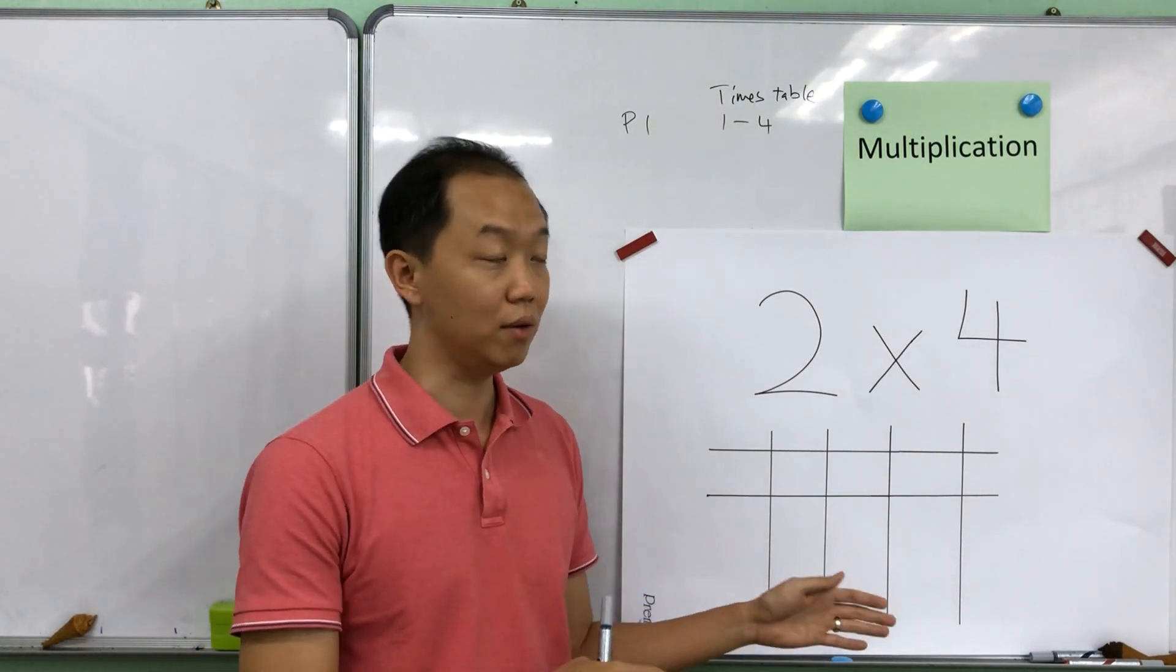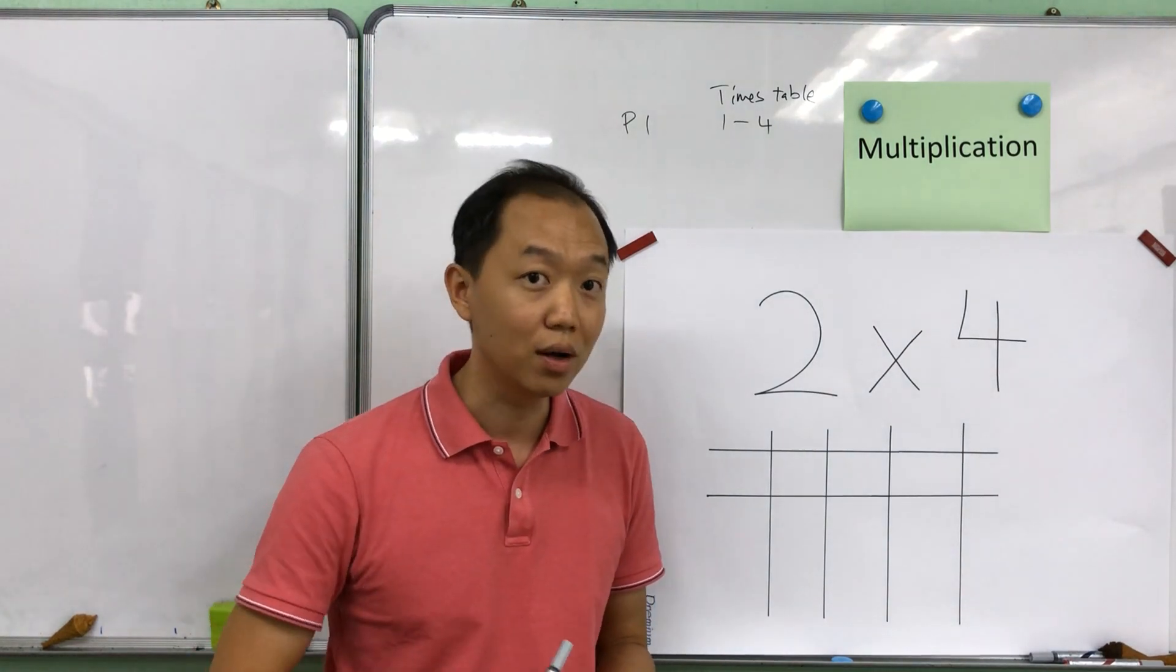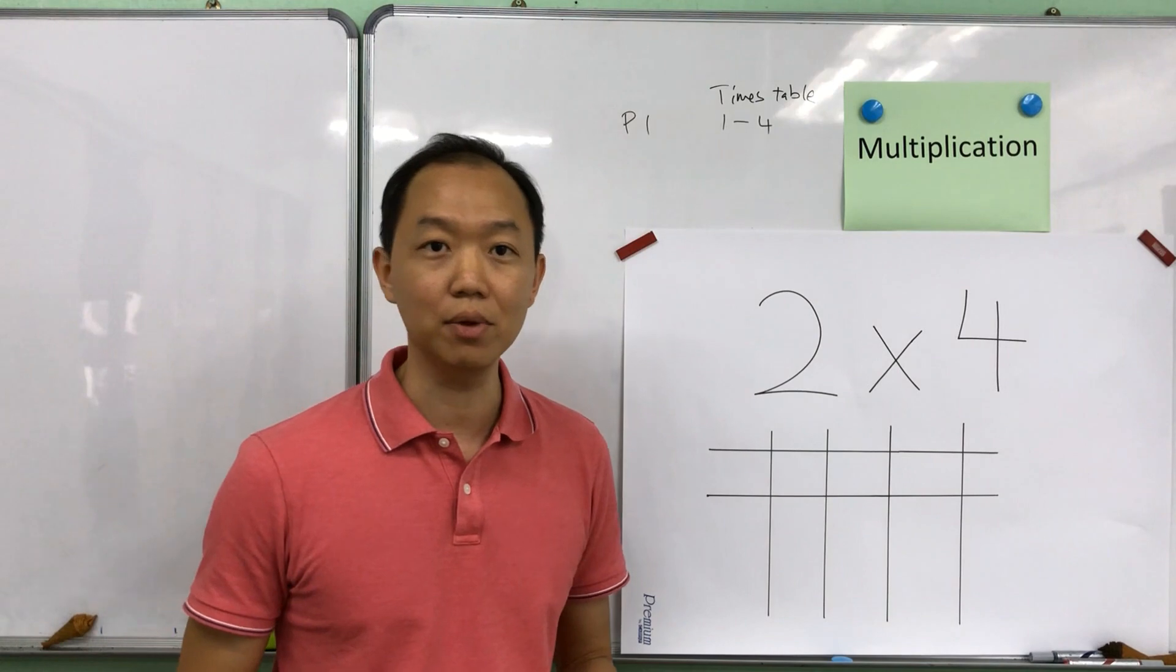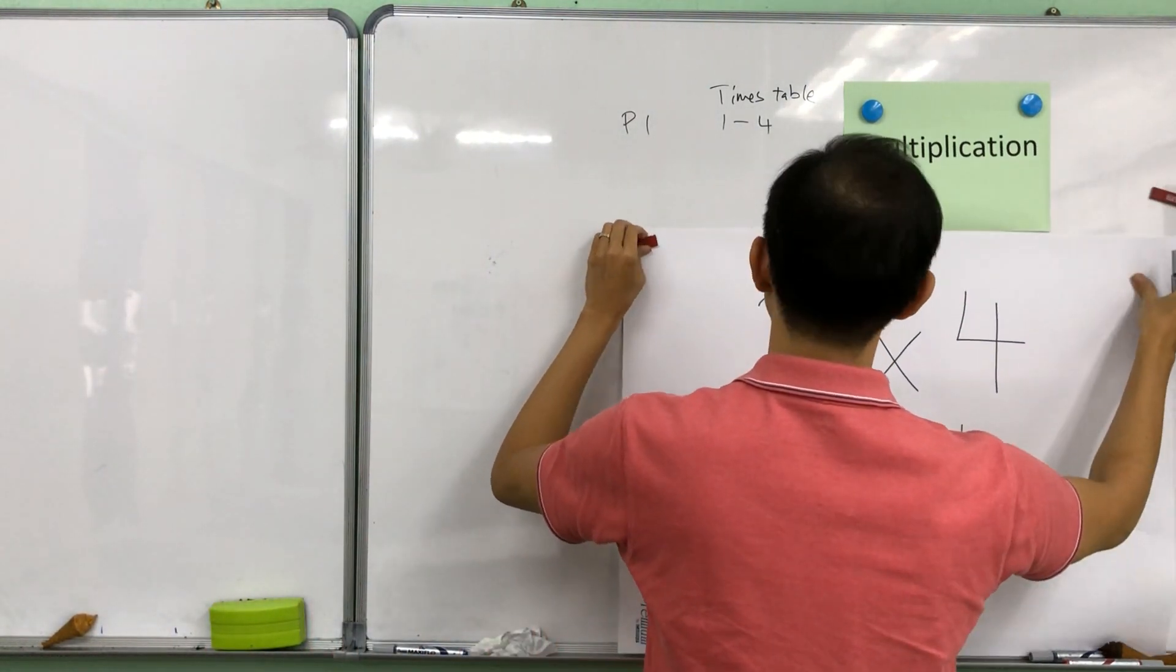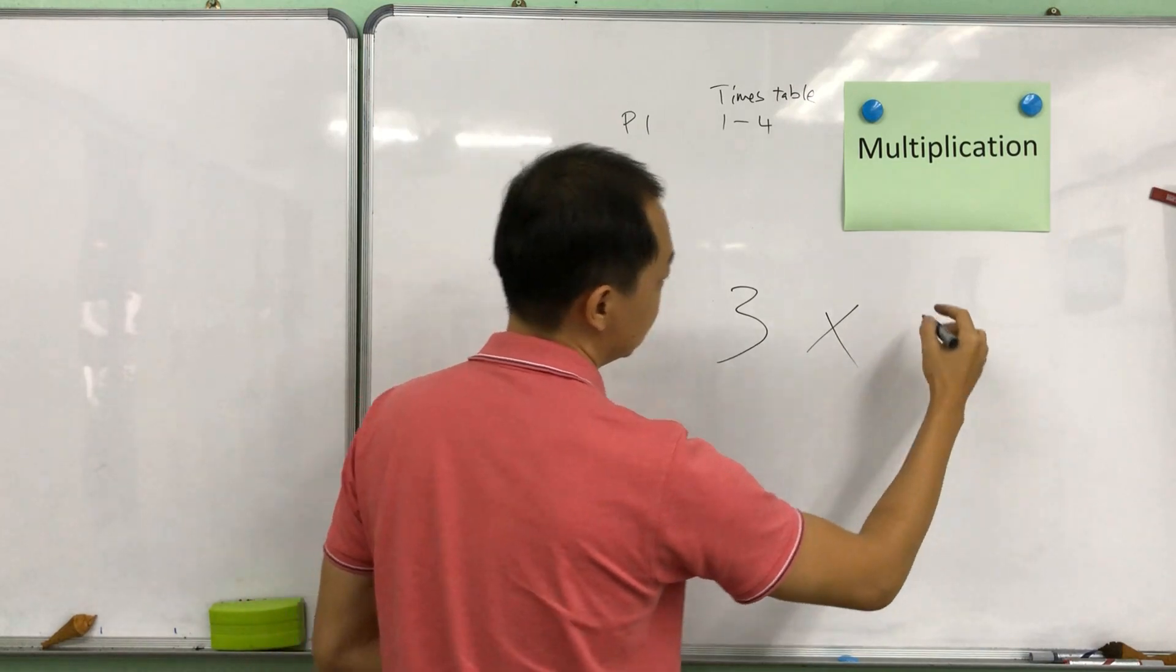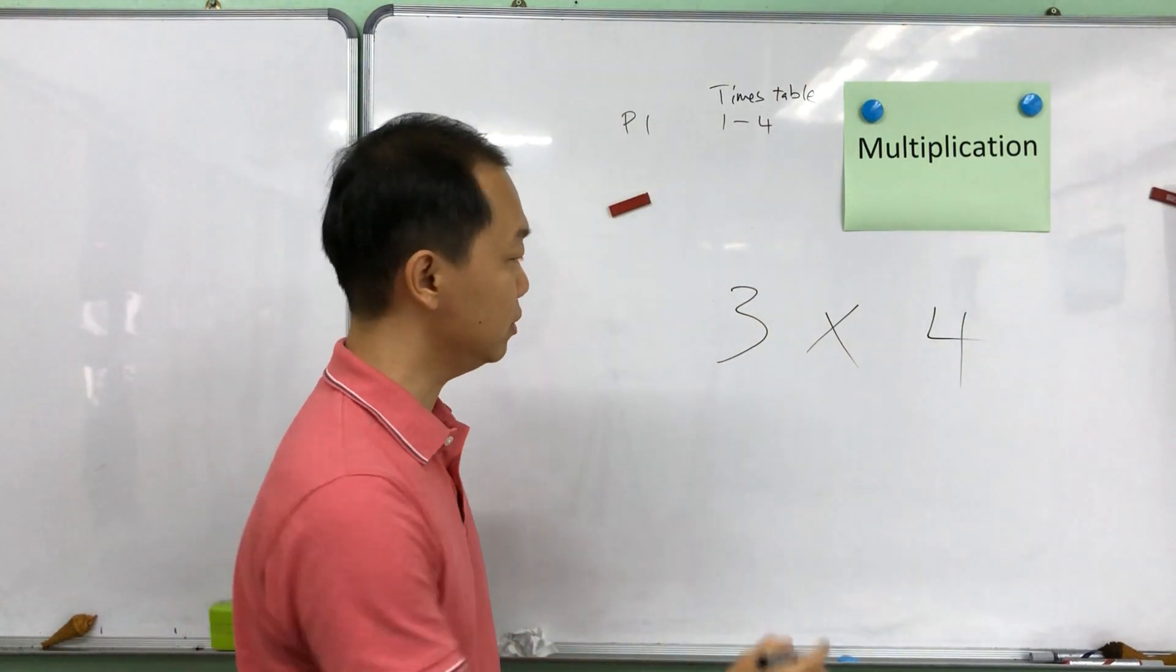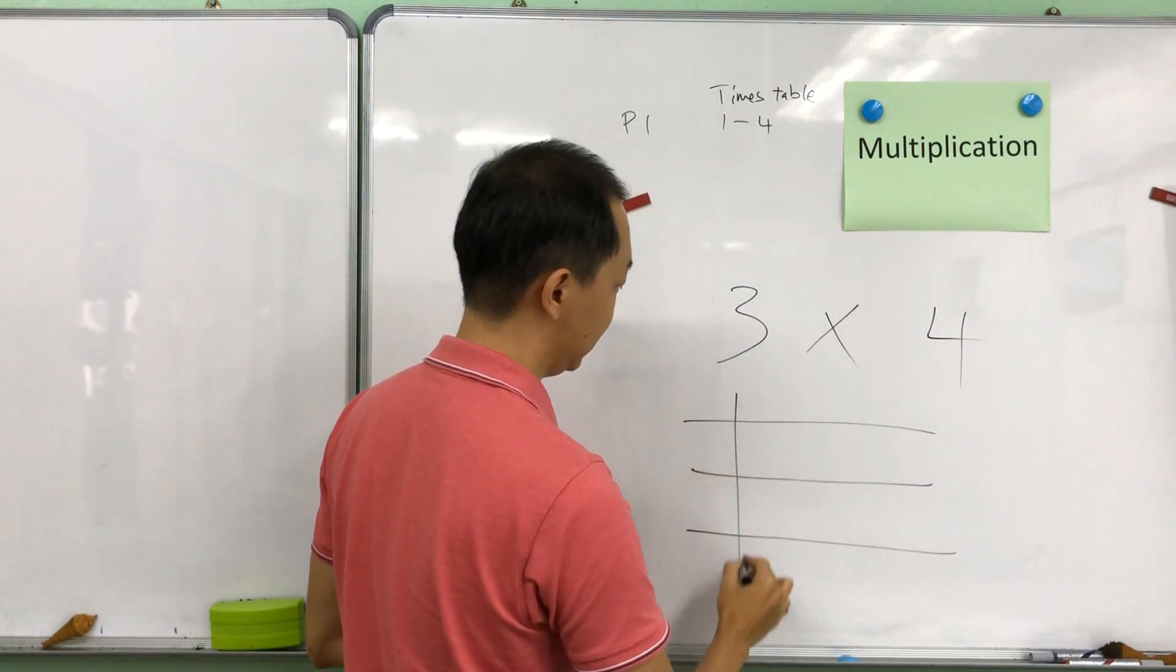So this type of method will be useful where they are able to draw lines on pieces of paper. I'm just going to demonstrate another one to show you how it works. Let's say I have a bigger number, let's say 3 times 4. So what we are going to do is we are going to draw 3 lines horizontal and then 4 lines vertical.